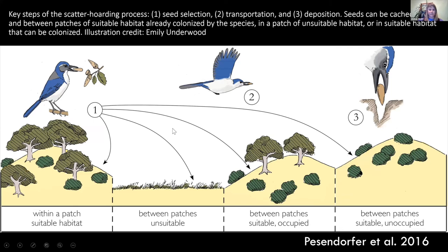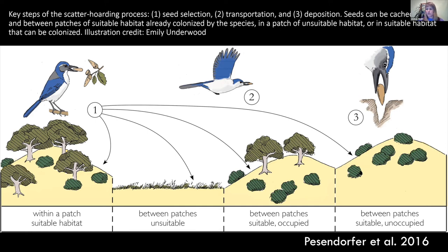Here's a cool diagram from Pessendorfer et al. 2016 that talks about the different factors going into selection and the key steps in the scatter hoarding process. It shows how birds can be caching within a suitable patch or in areas between patches, and how they select different sites. Birds can place seeds in all of these sites, but only some will allow the seed or acorn to germinate. Birds in comparison to rodents generally travel much farther, which helps a plant spread between an occupied patch and an unoccupied patch.